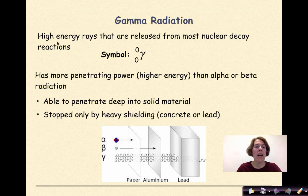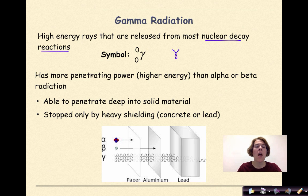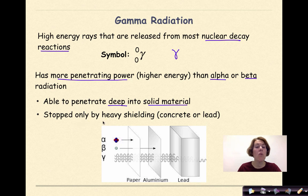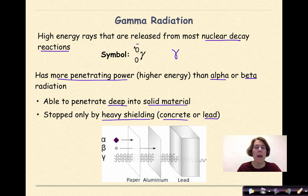Gamma radiation consists of high energy rays released from most nuclear decay reactions. The symbol is a gamma, which looks like this when drawn. Gamma has more penetrating power and higher energy than alpha or beta radiation. It can penetrate deep into solid material and is stopped only by heavy shielding like concrete or lead. When gamma radiation is released, neither the mass number nor the atomic number changes.